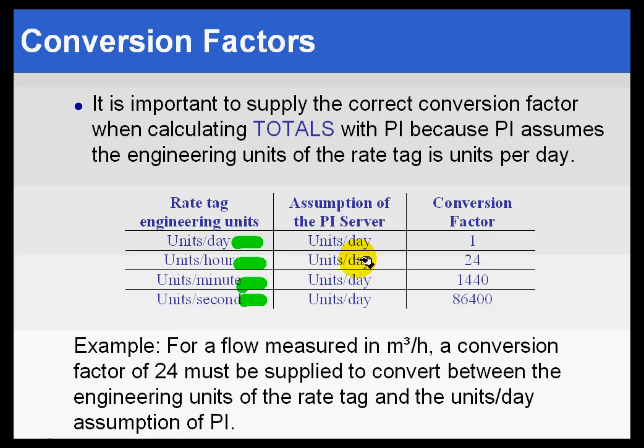Now let's compare that to the assumption that PI makes when you try to do a totalization of any of these. PI assumes the same thing, that the rate is in units per day. So you'll notice that PI really does not understand or pay attention to the ENG units field. We do not look at the engineering units and actually derive units. Instead, for all calculations that involve totals, we assume that the flows that we're totaling or the units we're totaling are in units per day.